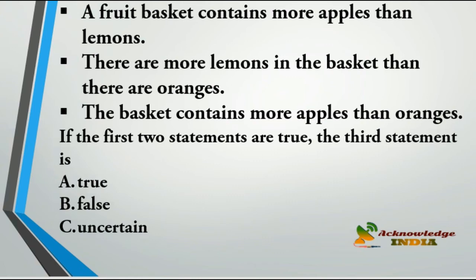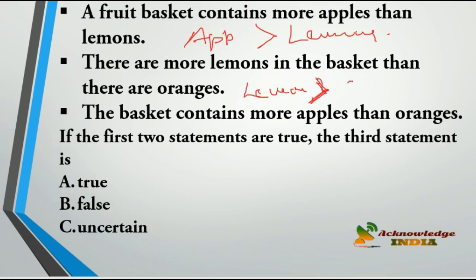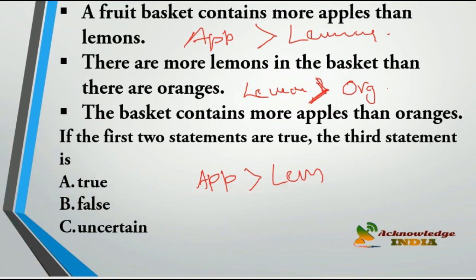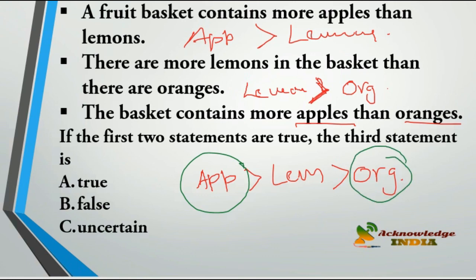Problem 4: A fruit basket contains more apples than lemons. There are more lemons in the basket than oranges. The third statement is: the basket contains more apples than oranges. Combining the two statements — more apples than lemons, and more lemons than oranges — means more apples than oranges. So the third statement is true.